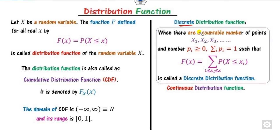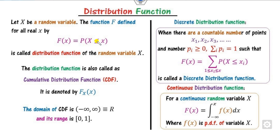For a discrete random variable with PMF summing to 1, you can define the CDF as the summation — it is essentially the cumulative distribution or cumulative frequency. On the other hand, for a continuous random variable, the CDF is defined as the integration of f of x, with the upper limit being x and the lower limit being minus infinity.